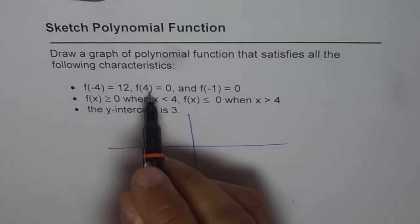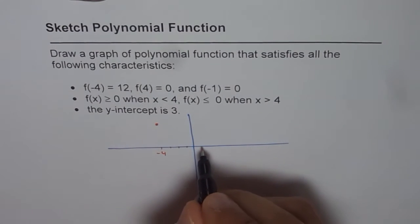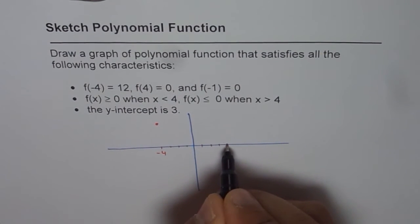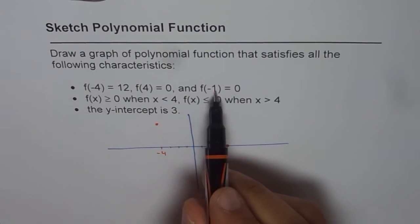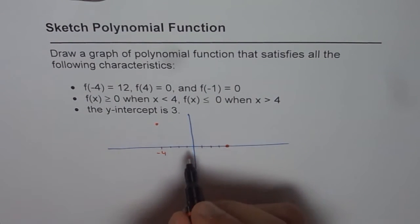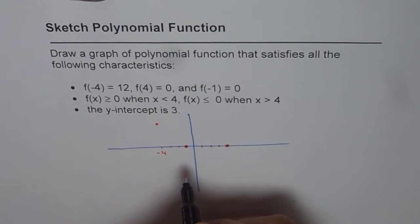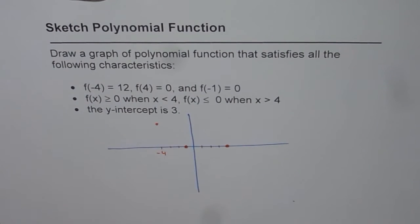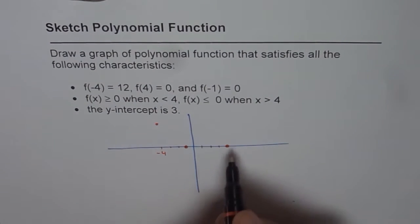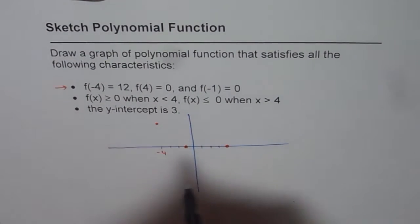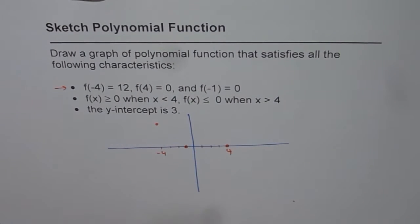f(4) = 0, so on the right side we have 0 here. And f(-1) is also 0, so that point is also on the x-axis. So these are the three points given to us. This is 4 for us.